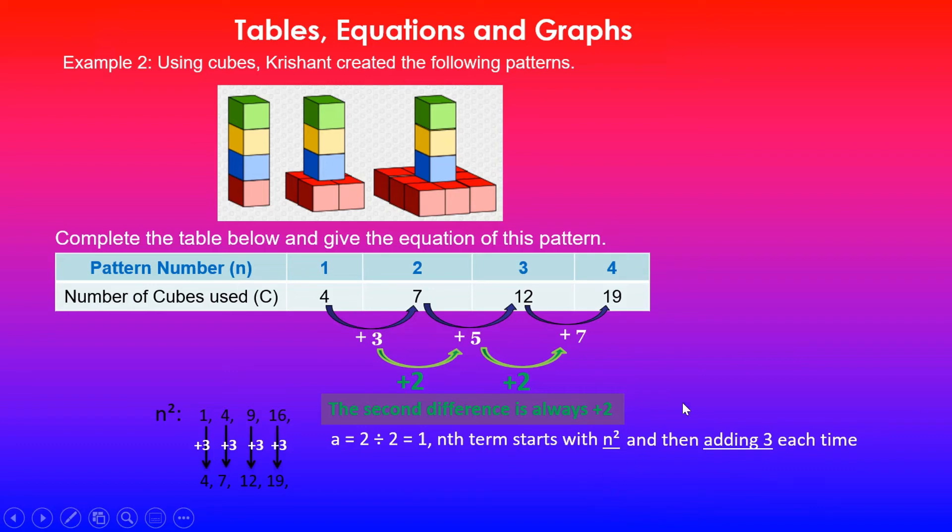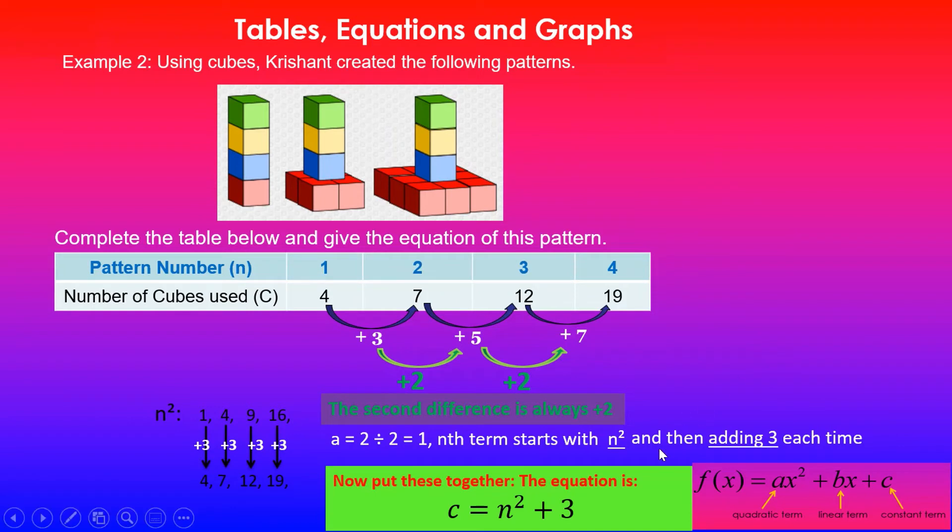Adding 3 each time will give you the equation of this pattern. So let's put that information together. The equation is c, which is the number of cubes, equals n squared because a value was 1. So you can see that the general form is ax squared plus bx plus c. a is 1, so n squared, and then there's no bx, there's no linear term because this is not going up by a constant. It remained constant, so this will be our constant term: plus 3. So there's no middle term, that means b value was 0.